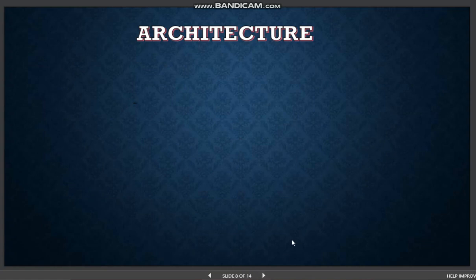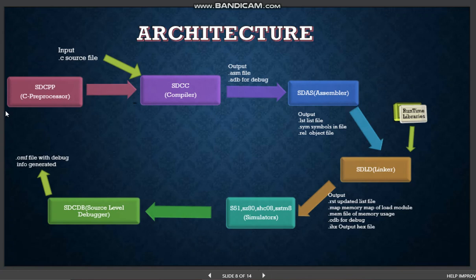For single source file 8051 projects, the process is straightforward: compiler, assembler, linker — yielding the following output files. Files created by the compiler include: source file dot ASM — the assembly source file; and source file dot ADP — when the debug option is selected, an intermediate file is generated containing debug information needed to create the dot CDB file by the linker.